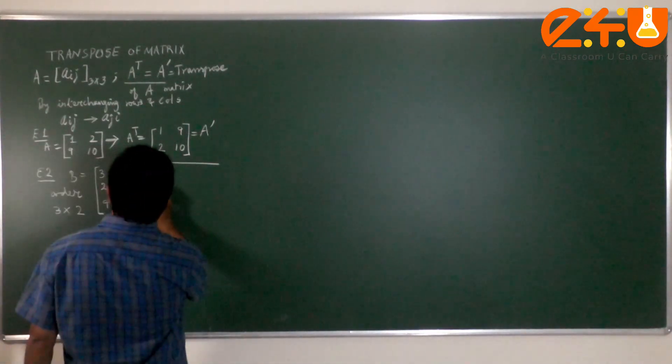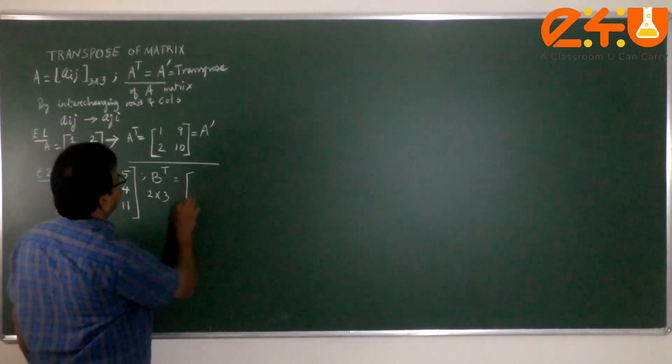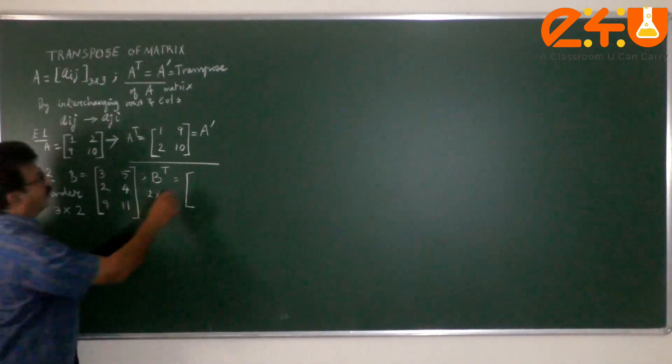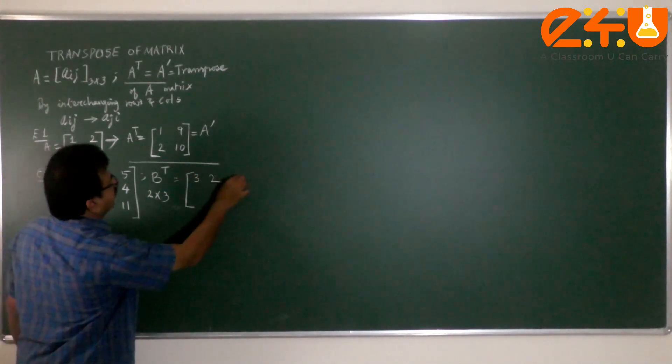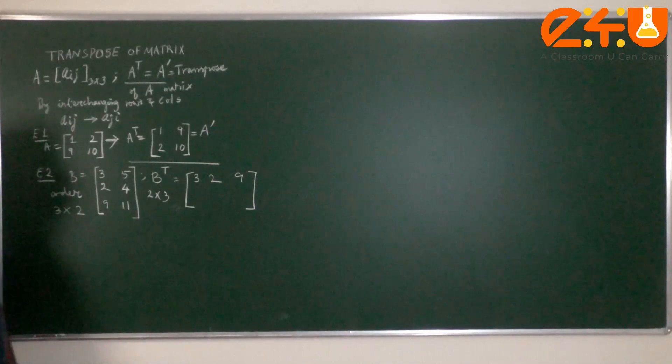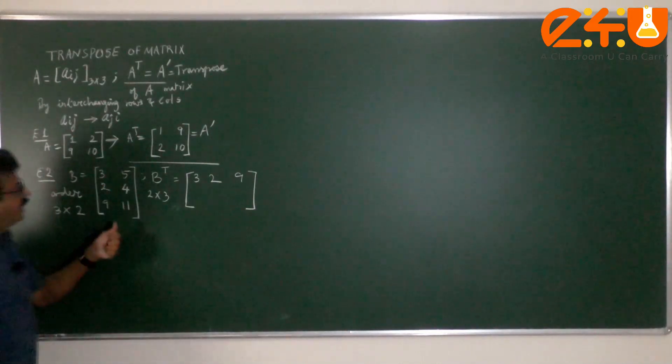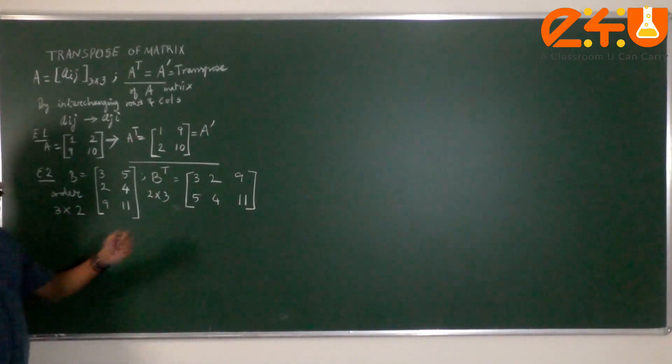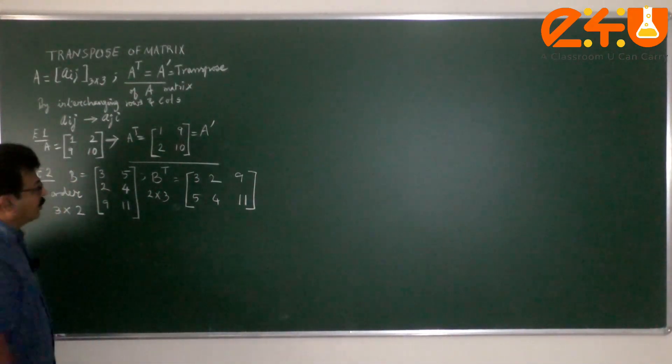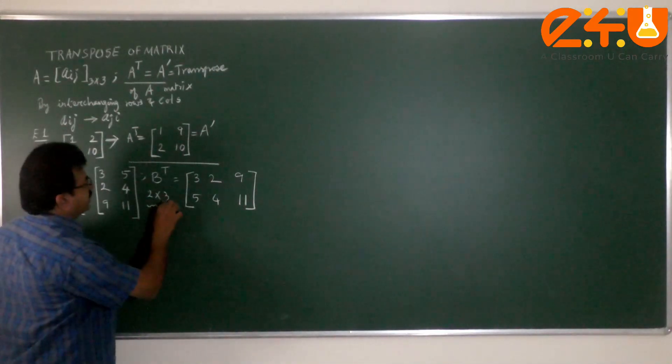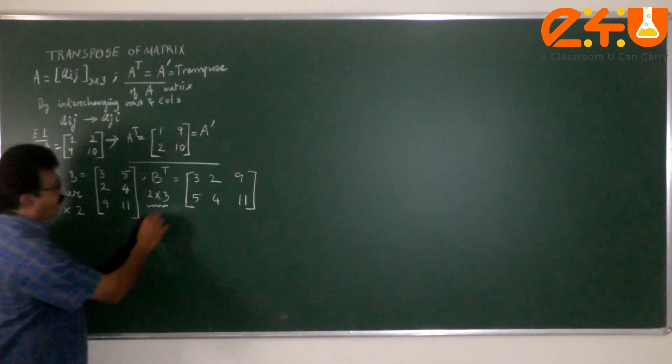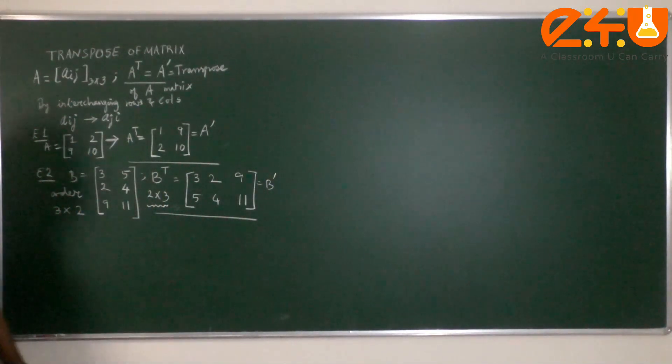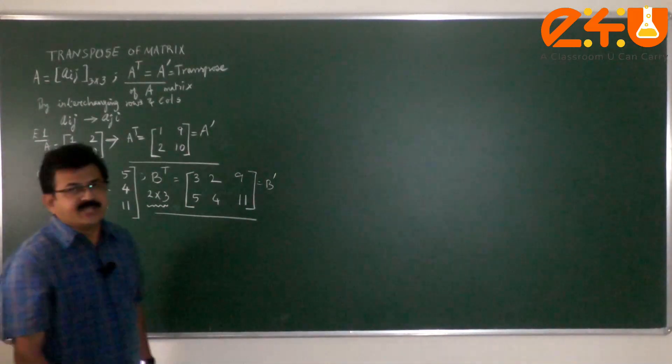For the matrix B, the order is 3 by 2, 3 rows and 2 columns. B transpose will have order 2 by 3. The first column 3, 2, 9 becomes the first row 3, 2, 9. Second column containing 5, 4 and 11 becomes the second row containing 5, 4 and 11. That is why this becomes a 2 by 3 matrix, B transpose, alternative symbol B dash.